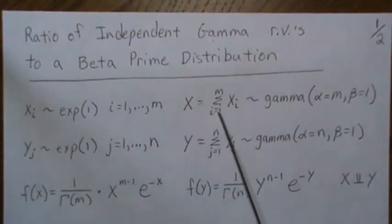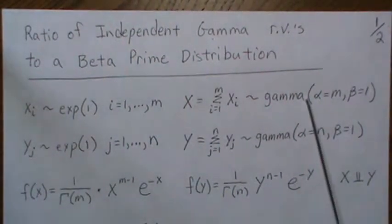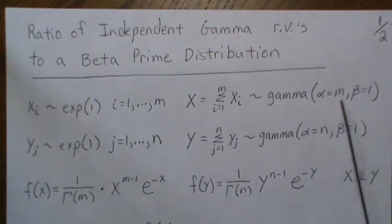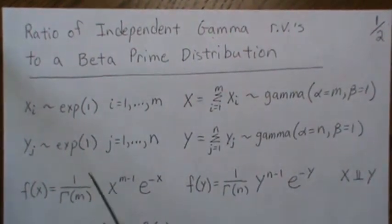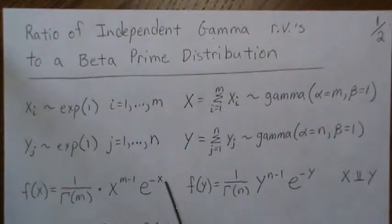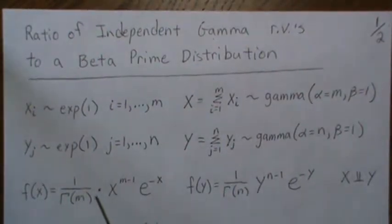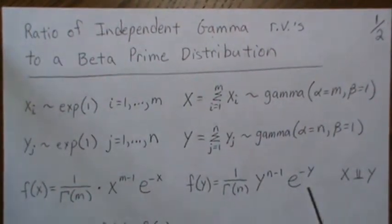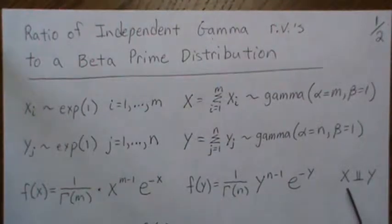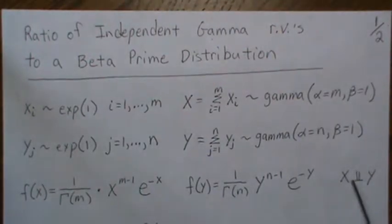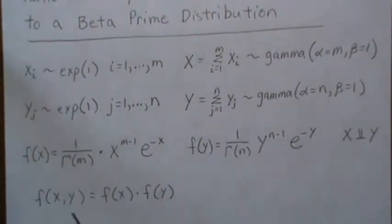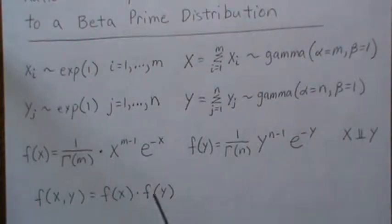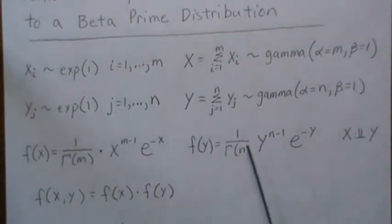So the distribution of x, gamma of m1, is this. Generally there would be a beta divided by beta and a beta raised to the alpha here. But since beta is 1, it's not present. And the distribution of y is this. x and y are independent. So that says their joint density is actually just the product of the two.